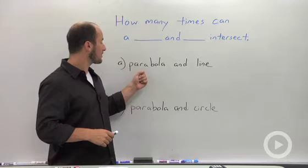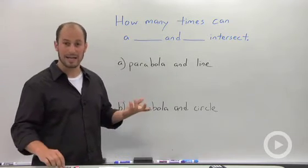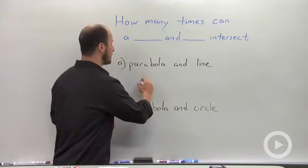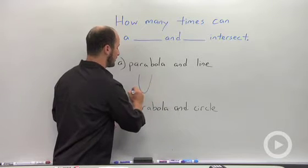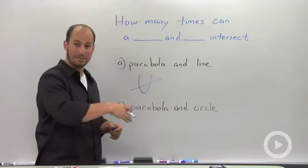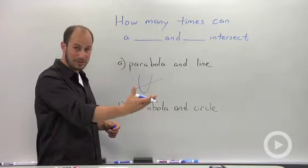So my first example is going to be a parabola and a line. Probably the easiest one to see is that they could intersect twice. If you have a parabola, the line crosses through both sides, it could cross twice.